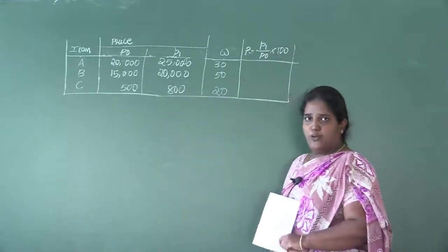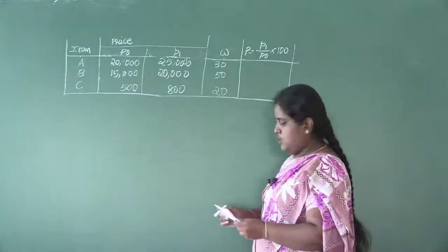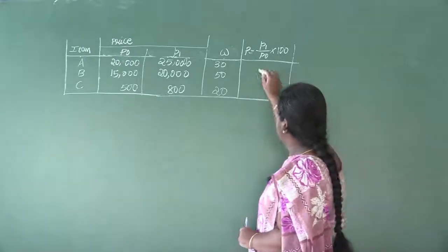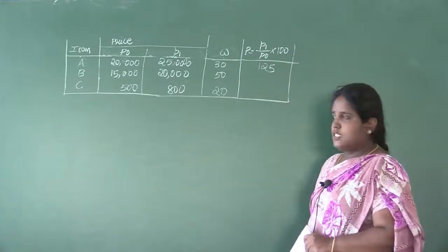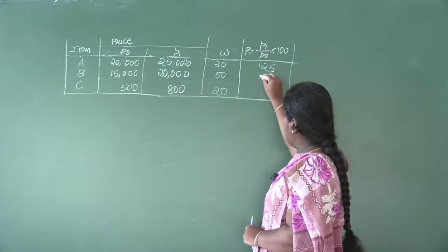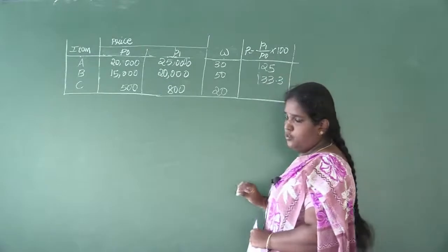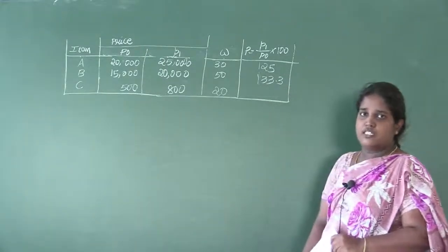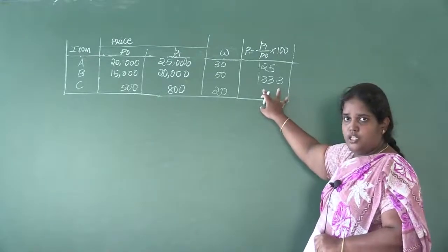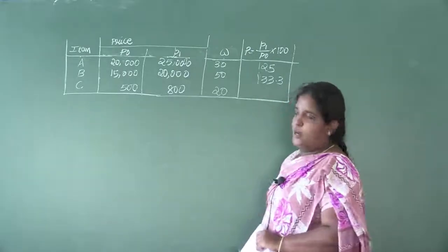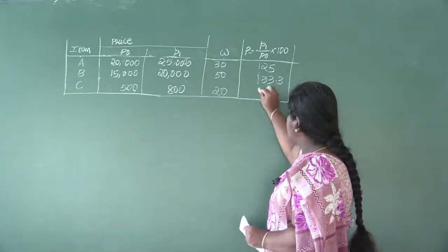For the first item: 25,000 ÷ 20,000 × 100 = 125. Next: 20,000 ÷ 15,000 × 100 = 133.33 — I am taking it as 133.3, keeping four digits total since the logarithm table only shows four digits. Next: 800 ÷ 500 × 100 = 160.